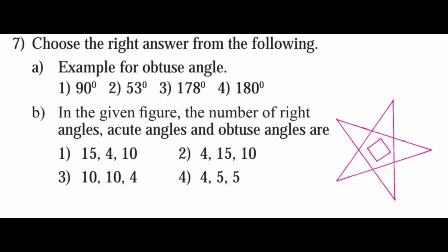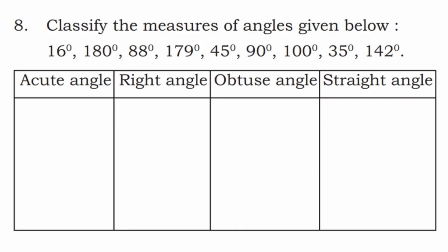Part b: In the given figure, find the number of right angles, acute angles, and obtuse angles. There are 4 right angles in the square. There are 5 acute angles and 5 obtuse angles. So option 4 is correct.